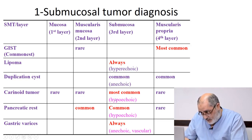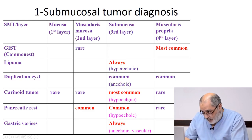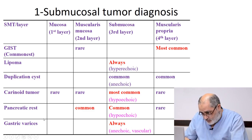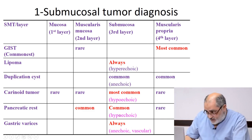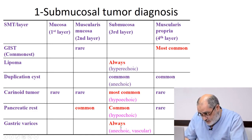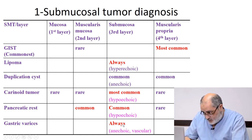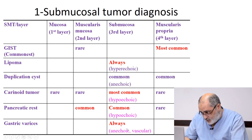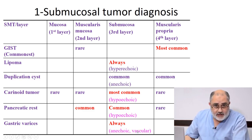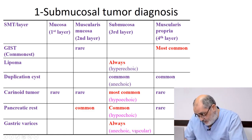Carcinoid tumor most commonly originates in the submucosa, the third layer, and is usually hypoechoic but may be hyperechoic. They rarely originate from other layers. Pancreatic rest commonly originates from the muscularis mucosa or submucosa, is usually hypoechoic, and we may identify a duct-like structure inside. Gastric varices are always located in the submucosa, the third layer — they are cystic and hypoechoic, jet black, but with high vascular activity inside: venous color flow signal.